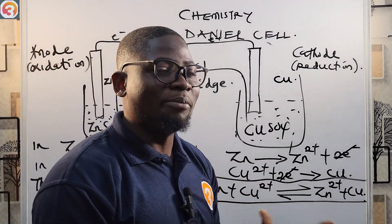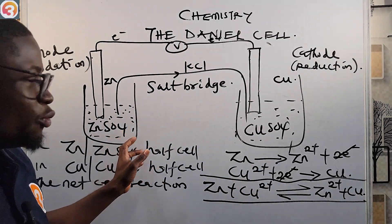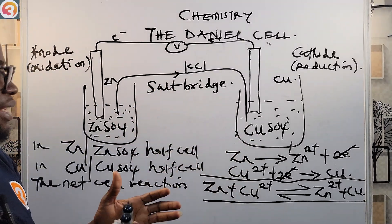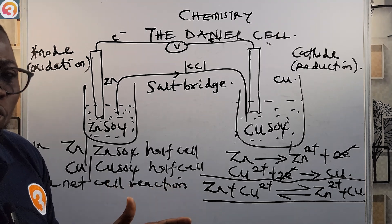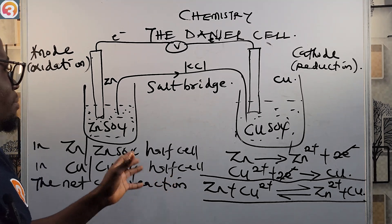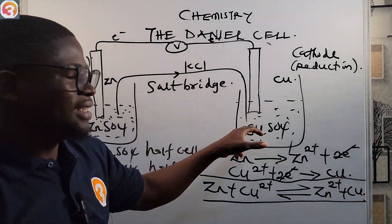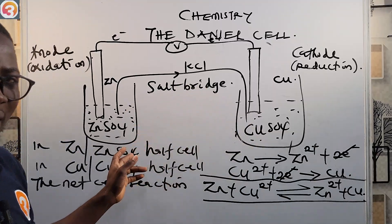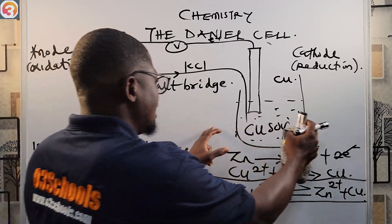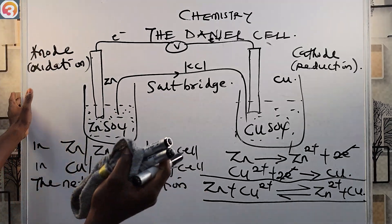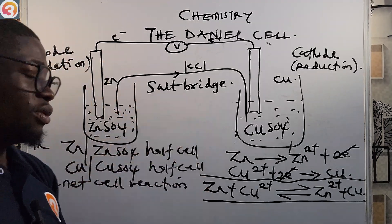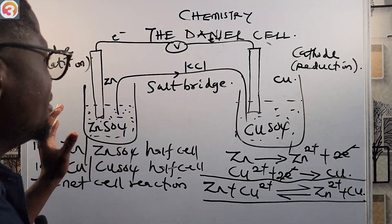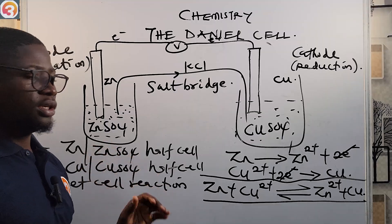The Daniel cell was beautifully crafted by John Frederick Daniel, separating the zinc ions and copper ions from each other. This separation prevents polarization, which would otherwise prevent electricity flow. The salt bridge connects the two half-cells while keeping the solutions separated.